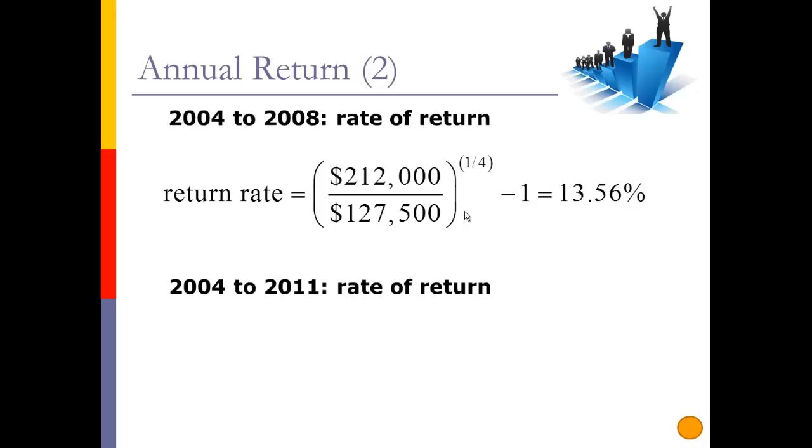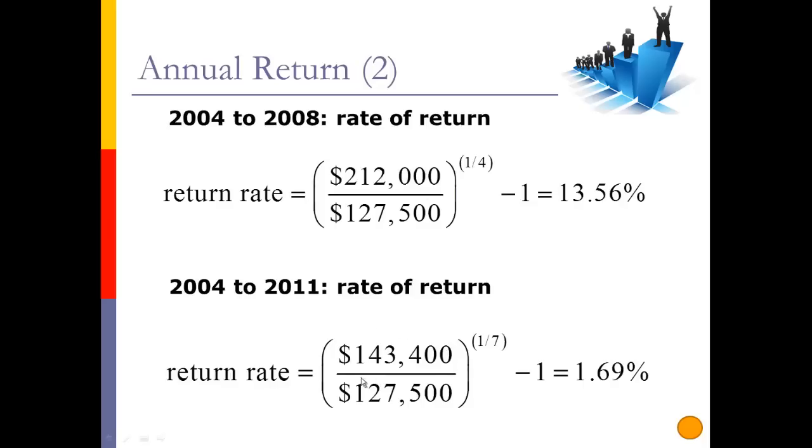Now, what actually happened by holding on to the property until 2011? What was my rate of return? The big change here are two changes. My ending value is $143,400, and my years is seven years this time. My beginning value is the same, because we're still talking about 2004. When we do this calculation, notice what we get. It's not a typo. It's only 1.69%. So by not selling in 2008, I went from having a great four-year investment of 13.56% to a seven-year investment of only 1.69%. Better than the savings accounts over that period of time, but still, not a great investment that way.